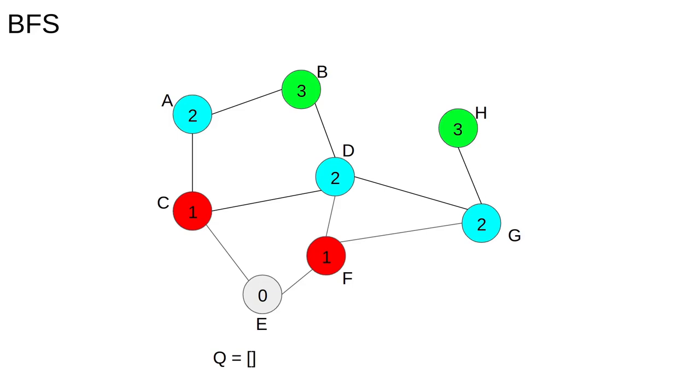We finish off the search by labeling the nodes B and H. Since these have no unlabeled neighbors, we're done. The labels of each of the nodes tell us the distance from E to any of the other nodes. So the shortest path from E to B, for example, has length 3.